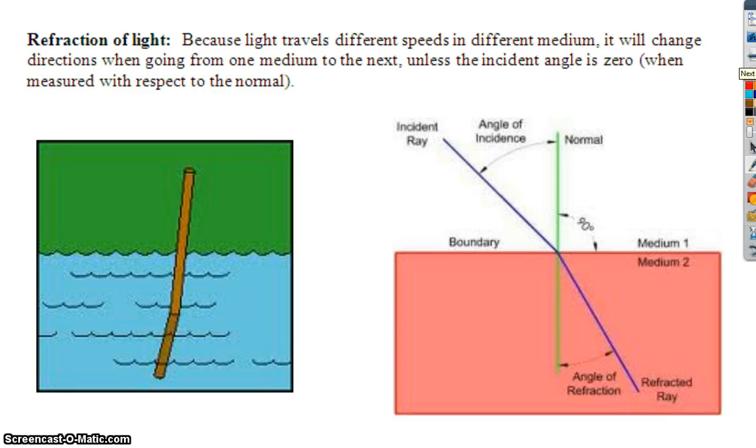The next behavior of light that we're going to talk about is refraction of light. So when light goes from one material to another material, it's bent or refracted. And that's because light travels at different speeds in different materials. And so what happens is, a good way to kind of picture what's going on,